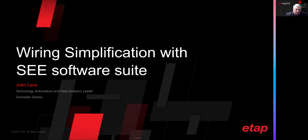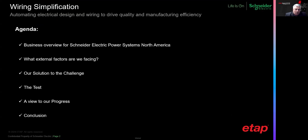I would like to talk to you briefly today about the wiring simplification initiative we have going on, and it's deploying the CE Electrical Software Suite. During this session, we'll talk about the following topics. I'll give a brief overview of Schneider Electric Power Systems North America and explain a little bit about the challenges that we face there. Also talk briefly about the additional factors that are external to our company that are also adding to our challenge.